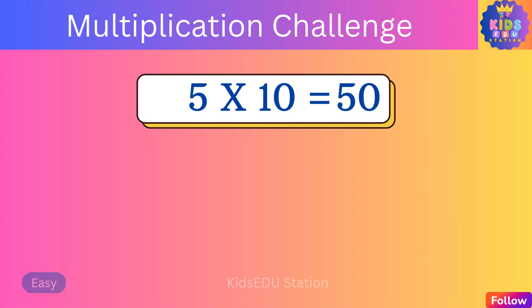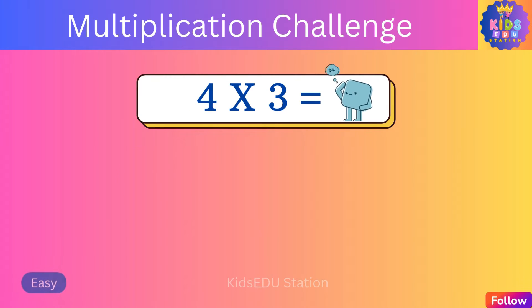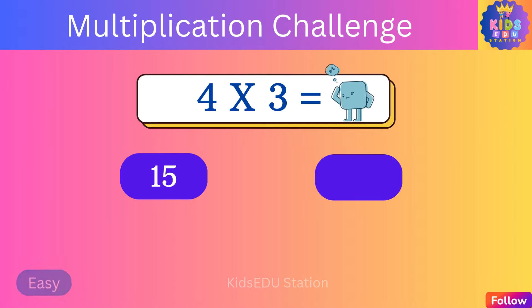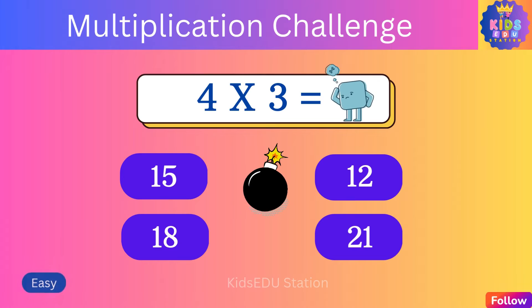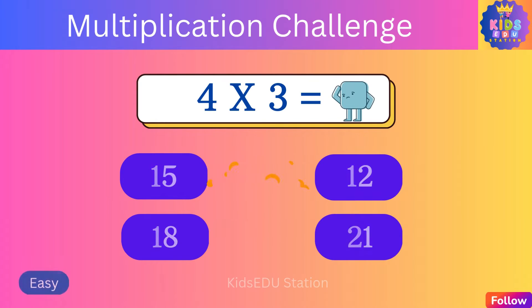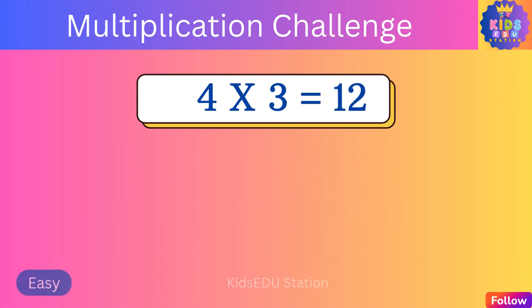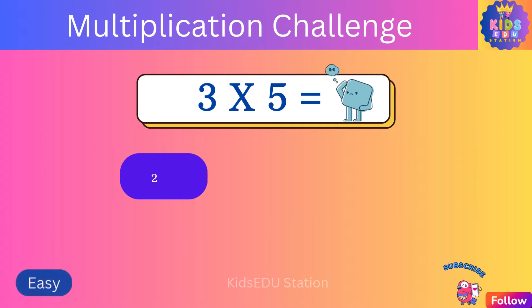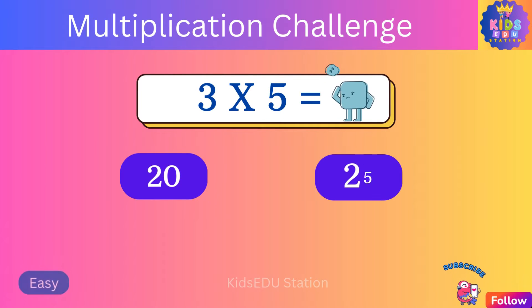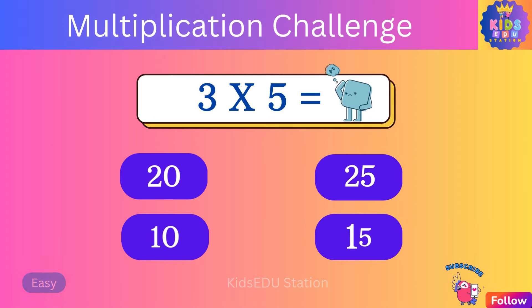Two times five is ten. What is five times ten? Thirty, sixty, fifty, forty.